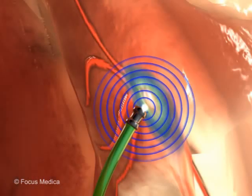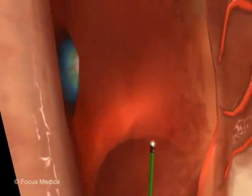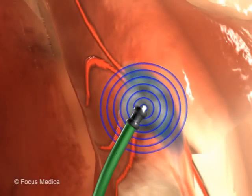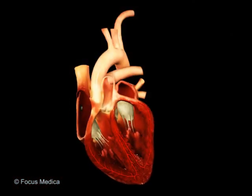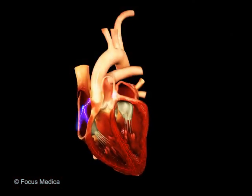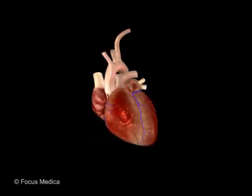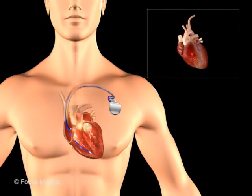Ablation of the AV node: In this procedure, radiofrequency energy is used to injure the AV node, reducing the number of electrical impulses that travel down to the ventricles. The procedure results in a permanent slow heart rate, and a permanent pacemaker is used to maintain an adequate heart rate.